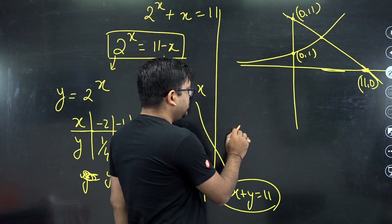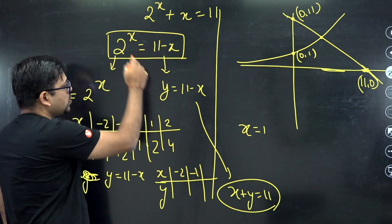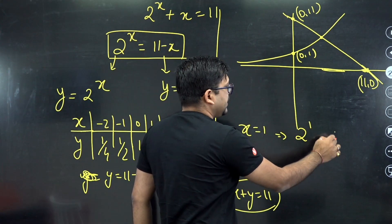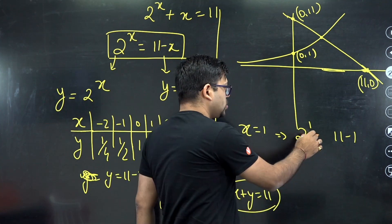So for example, if I do x equals 1, this becomes 2 raised to power 1 and this becomes 11 minus 1. So this is 2, this is 10, very far difference. So not equal, obviously.